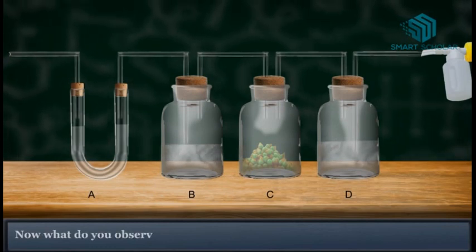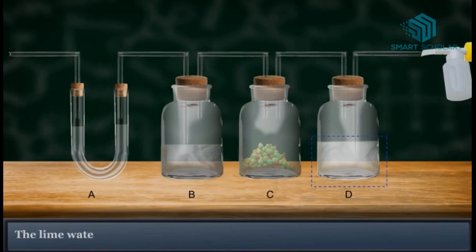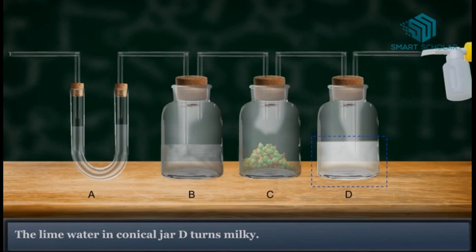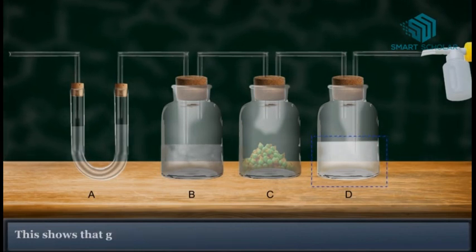Now, what do you observe? The lime water in conical jar D turns milky.